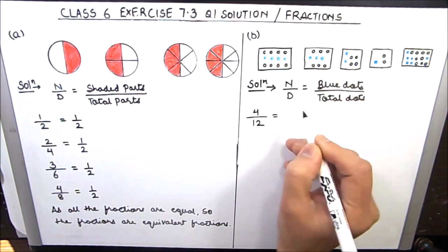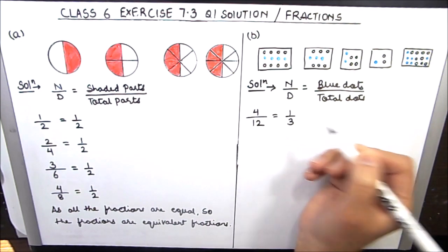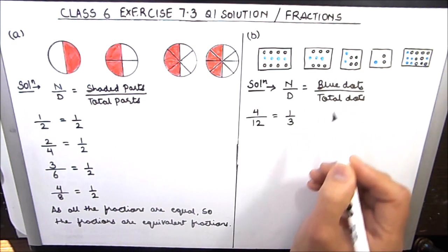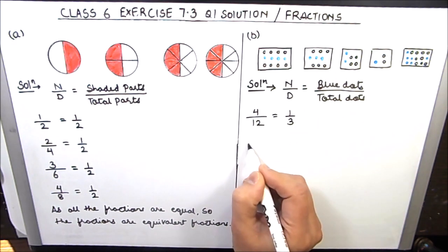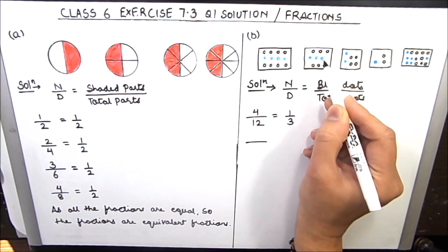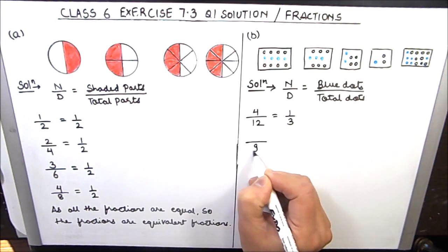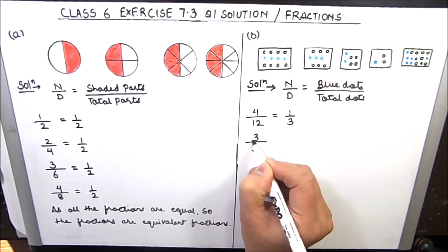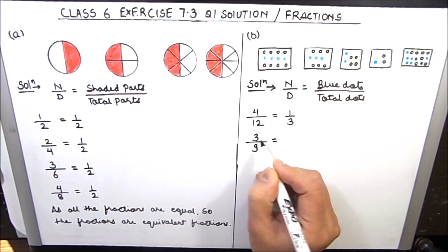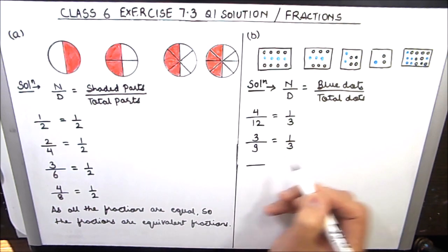4 by 12 can be reduced to 1 by 3 (4 times 1 and 4 times 3). For the next picture: 1, 2, 3, 4, 5, 6, 7, 8, 9 — total number of dots is 9, out of which 3 dots are blue. So the fraction 3 by 9 is reduced to 1 by 3.